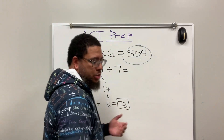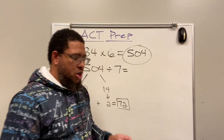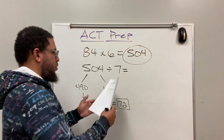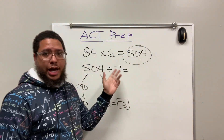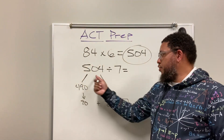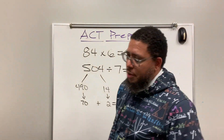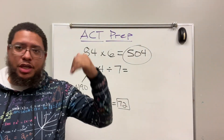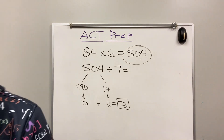So the answer is 72 — that's Adam's actual correct average test score. And even if you didn't use this method, you are allowed to use calculators on the ACT, so you could have just done 504 divided by seven and still gotten 72. Embrace the new math, keep practicing. I'll see y'all on the next video. Peace.